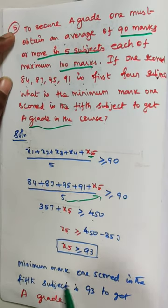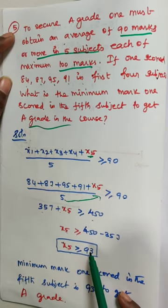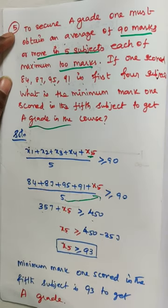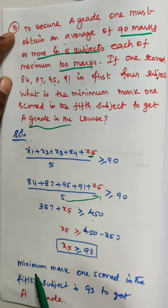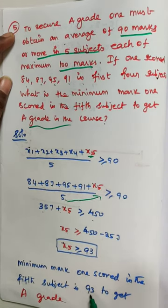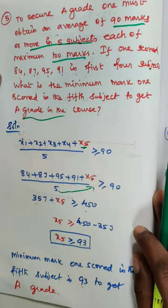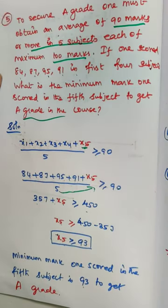So the minimum mark one scored in the 5th subject is 93 to get A grade. This is the answer for this 5th subject. Clear? Thank you children.